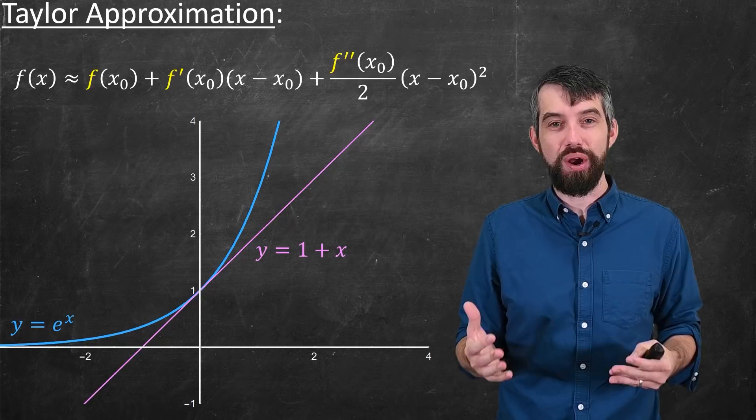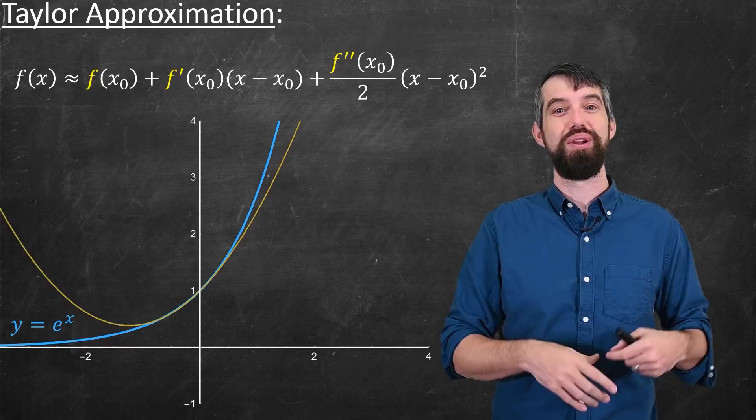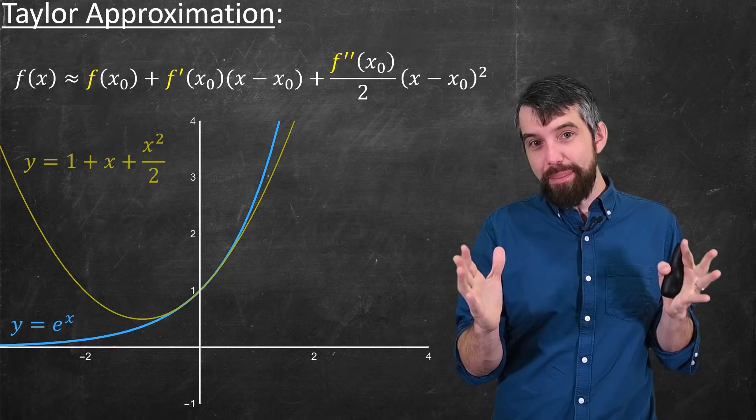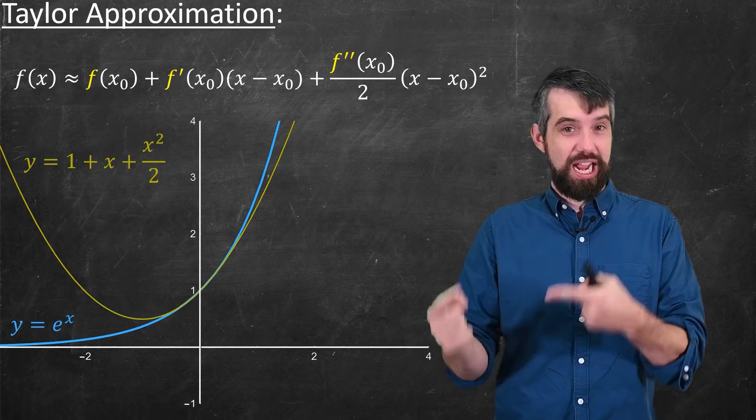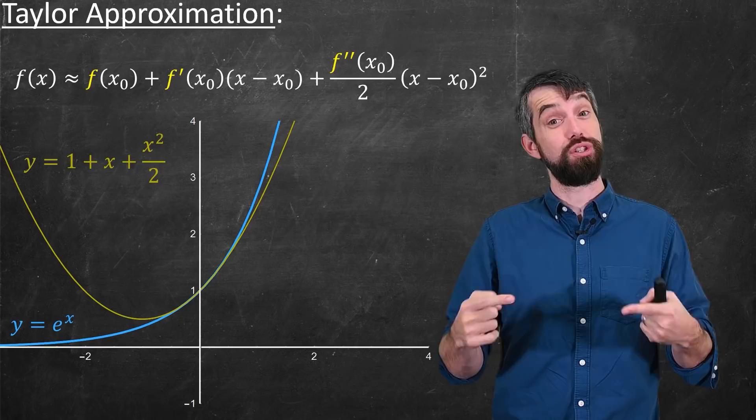And then finally, if I add that third term, the so-called second-order term, instead I'm going to make this a quadratic, which is going to be 1 + x + x²/2. And you can sort of visually see here how this parabola is a better approximation to e^x than just the constant or just the linear was. So we're going to use this Taylor approximation as part of our approach to get to Sterling's approximation. That is the second ingredient.